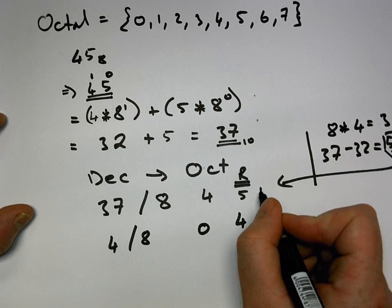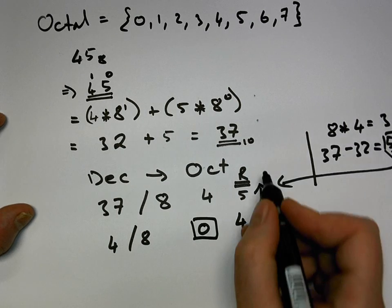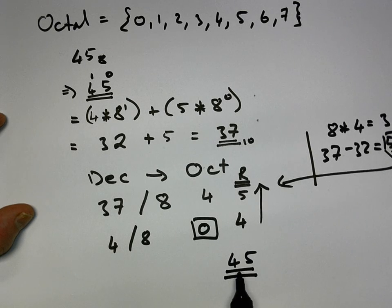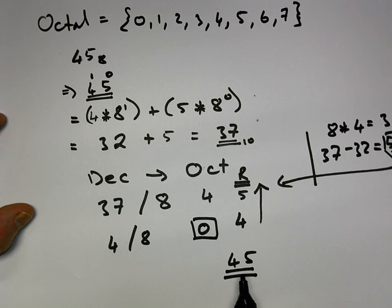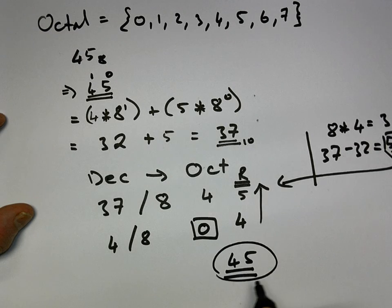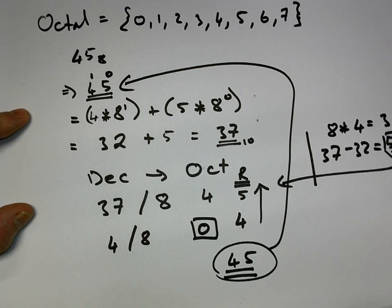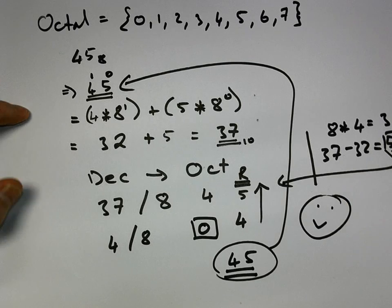So we read back up, just like the other ones. We finish and we get a 0 here. We read back up and we get 45. Which means that we started off with our decimal number, we go back to our octal number, we get 45, which is the exact same as what we started off with. So we're all done. We'll draw a little happy face.